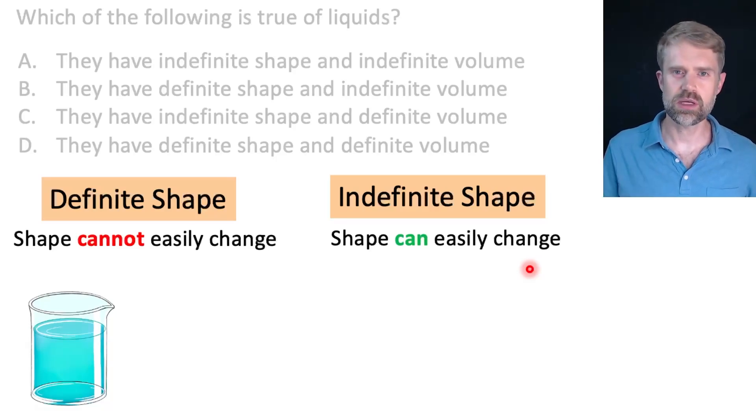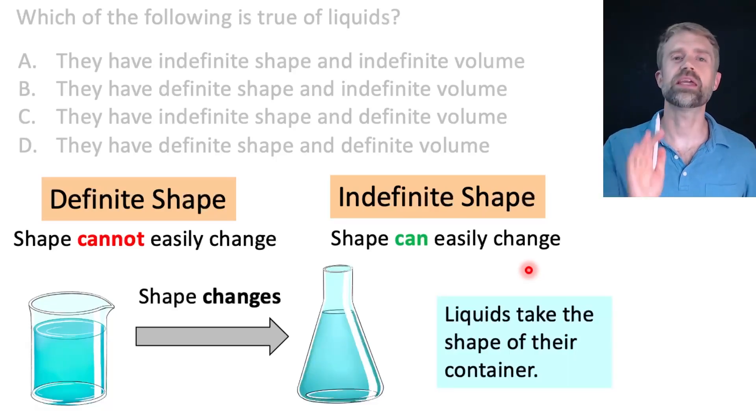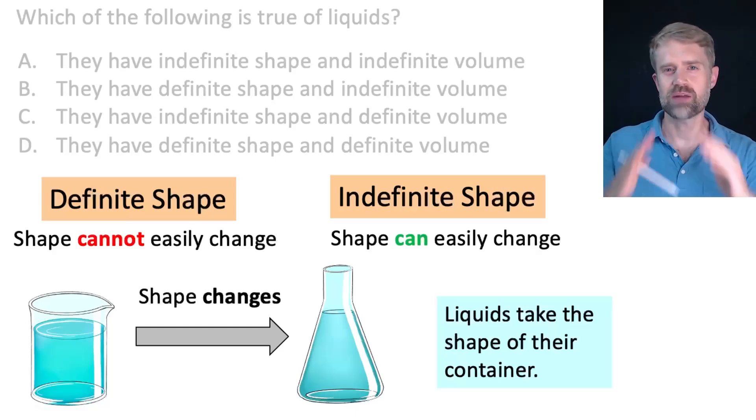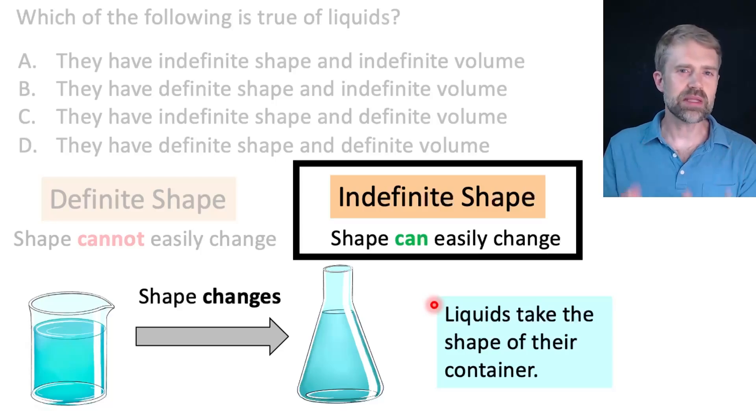So what do you think? For liquids, can the shape easily change? Yes, it can. Here we have water in a beaker. And the water has the shape of the beaker. Okay, then if we take that water and pour it into a new container, into this flask, the shape changes. Now the water has this kind of triangle shape of the flask. We often say that liquids take the shape of their container. So yes, the shape easily changes. Pour liquid into a new container and it gets a new shape. And that means that liquids have an indefinite shape. The shape of a liquid can easily change.